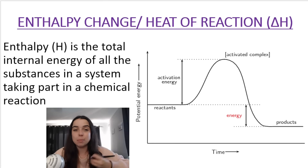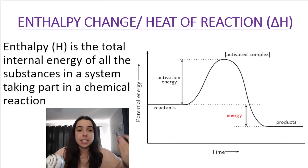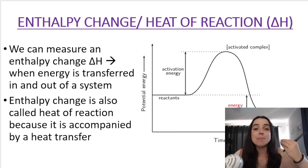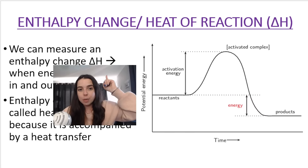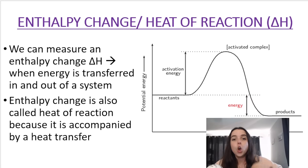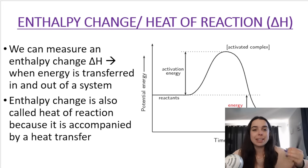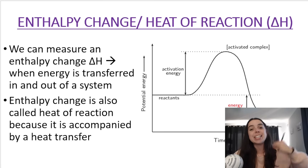Enthalpy, represented by the symbol H, is the total internal energy of all the substances taking part in a chemical reaction — so the reactants and the products. Although it's difficult to measure enthalpy, we can measure enthalpy change or the heat of reaction. That is when energy is transferred into or out of the system — basically how energy changes throughout the reaction.